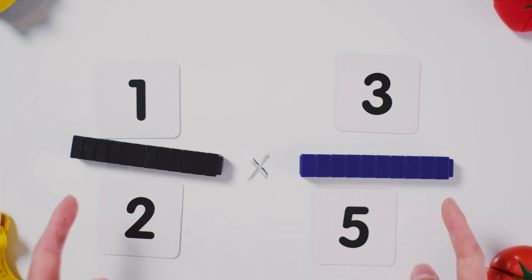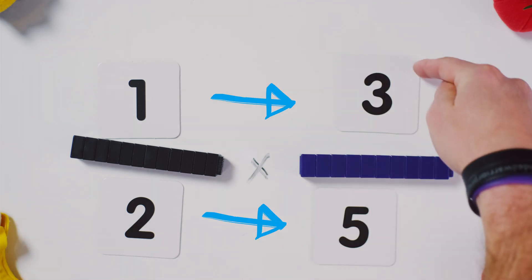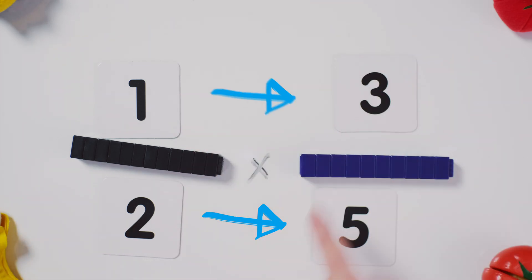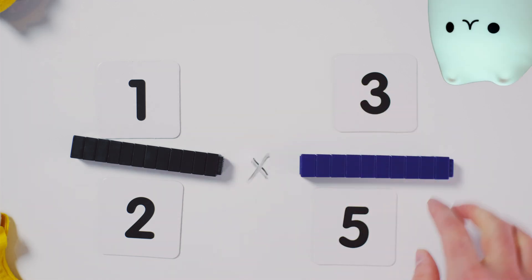Let's multiply one half by three fifths. Remember, you multiply the numerators together, you go straight across and you multiply the denominators to get one by three.